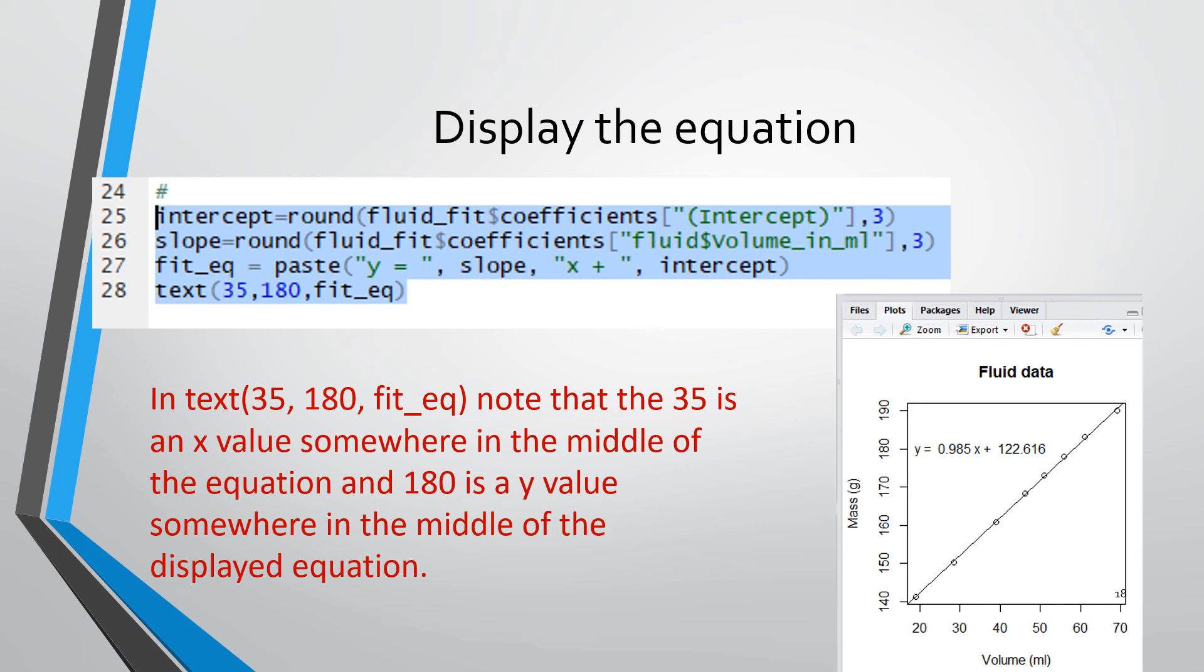And then we are going to put that string onto the equation using the text method. And we have arguments 35 and 180. 35 is an x value, sort of in the middle of the plot, and fit_equation is the actual typed out equation.